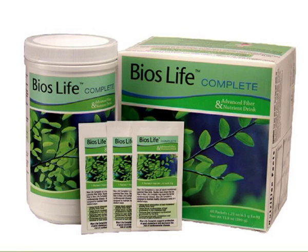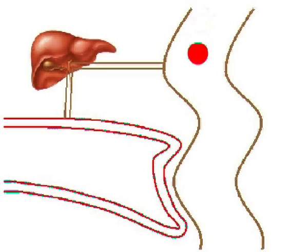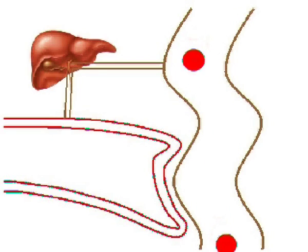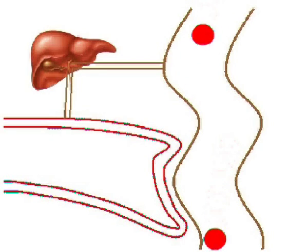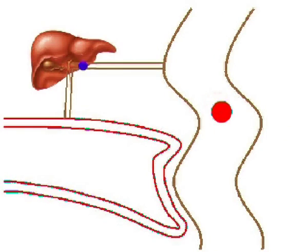Here you see how it works. This is the intestinal tract, and this is the blood. Those are the three main components when it comes to regulating cholesterol through soluble fiber.